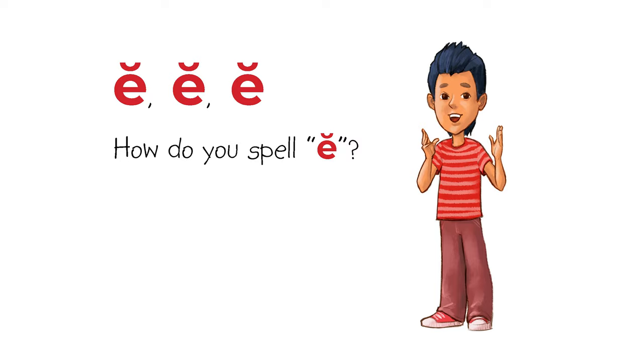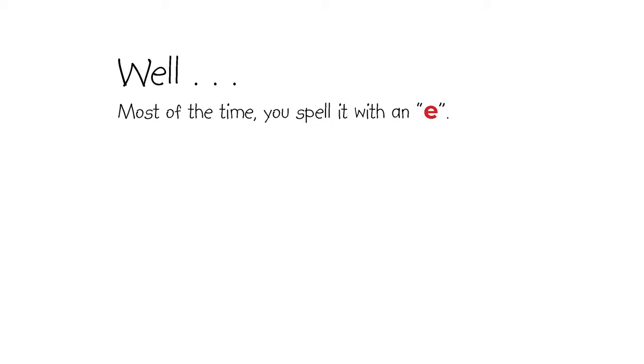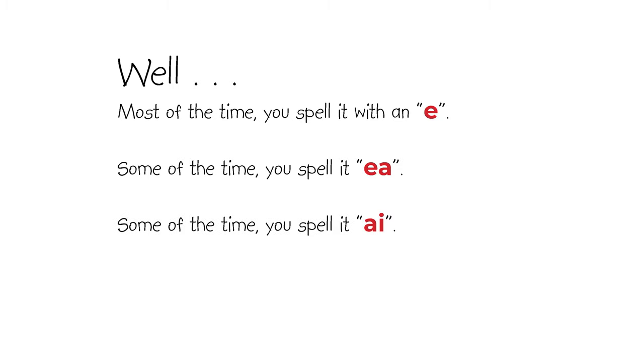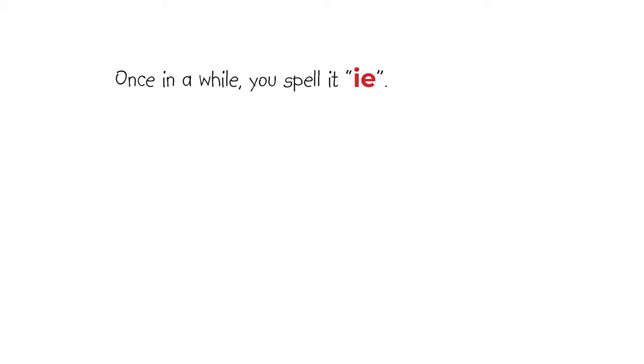E, E, E. How do you spell E? Well, most of the time, you spell it with an E. Some of the time, you spell it E-A. Some of the time, you spell it A-I. Some of the time, you spell it with an A. Once in a while, you spell it I-E. Once in a while, you spell it A-Y.